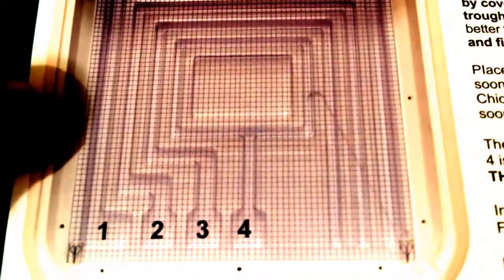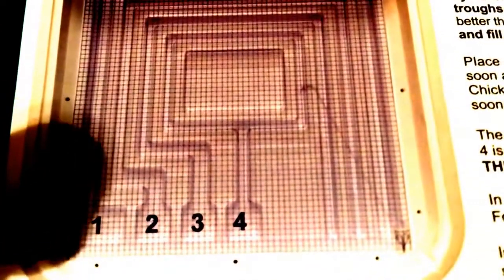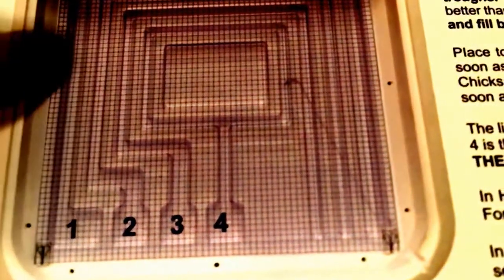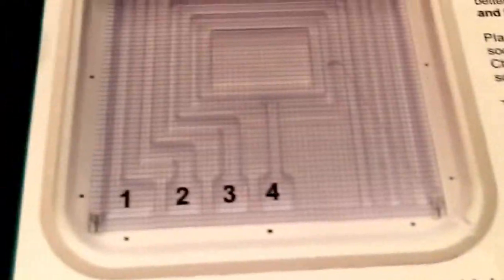Most of the time, as the directions say, you only want to fill tray number one. The humidity in the incubator is controlled by how much exposed surface area of water you have. If you wanted super high humidity, you would fill all four. But the directions here don't give any instance where you would fill all four.